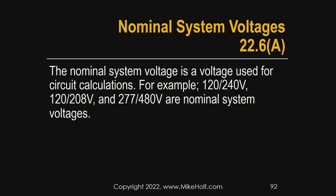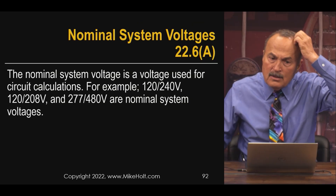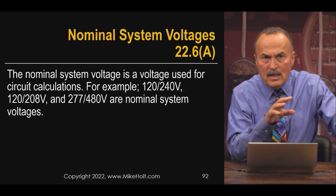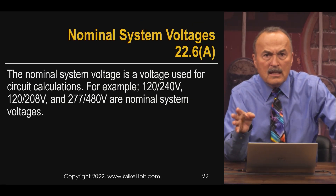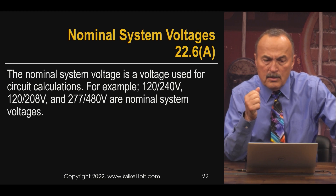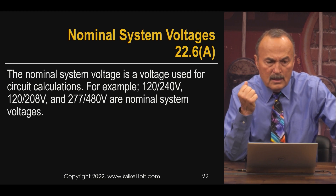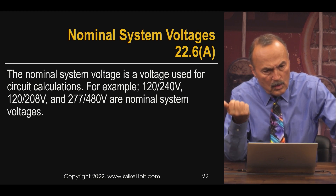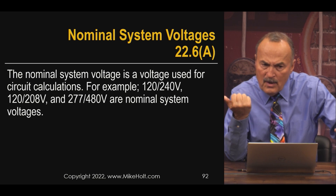In the National Electrical Code, when you're doing electrical calculations — it's NEC section 220.5A, voltages. Unless other voltages are specified, for the purpose of calculating branch circuits and feeder loads, nominal system voltages are used — 120, 120/240, 208Y/120, 240, 277/480.